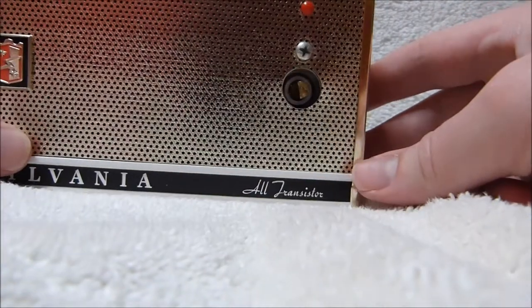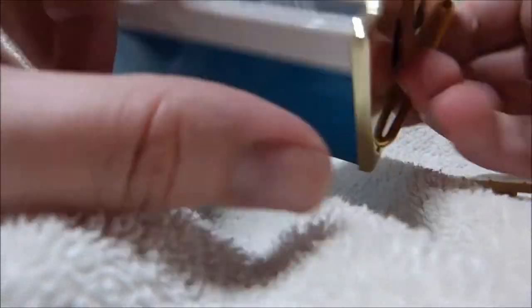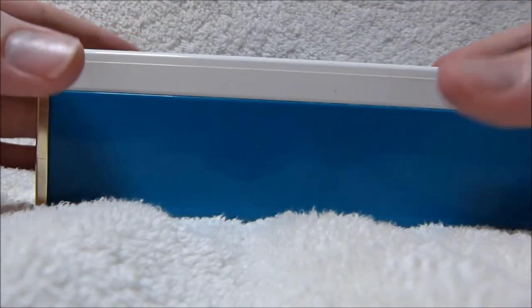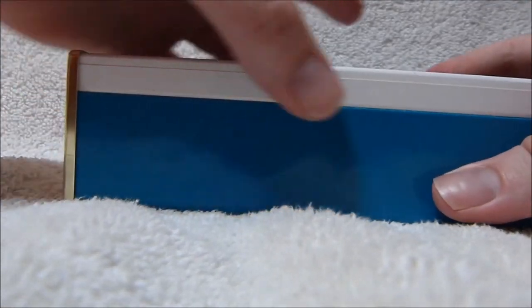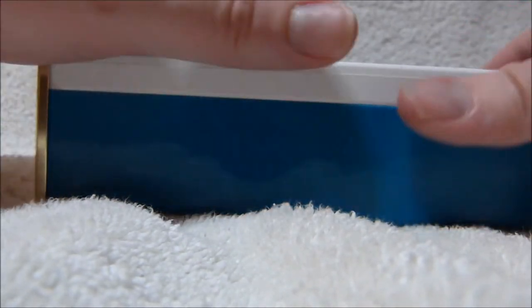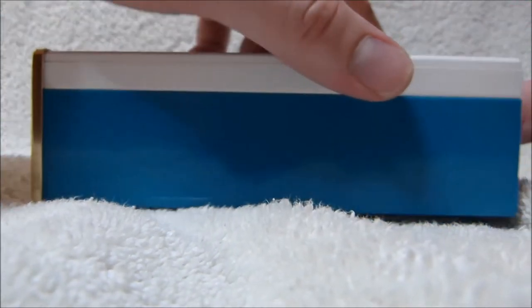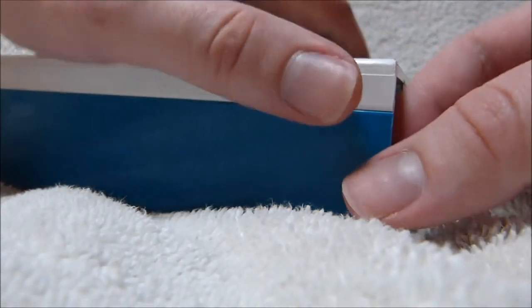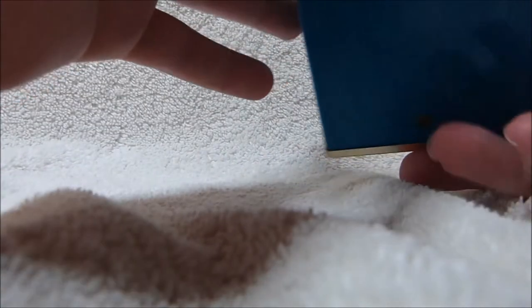So you take off the volume knob and undo this screw, and pull this piece off. And then you've got to carefully slide the top part back a little bit, and then kind of bend the lower case outward, like that, until you can pop the top off.